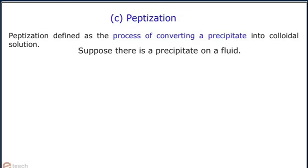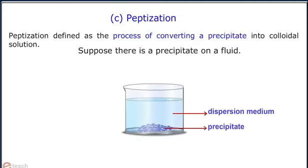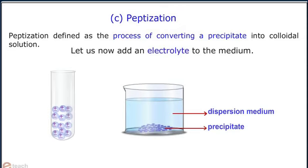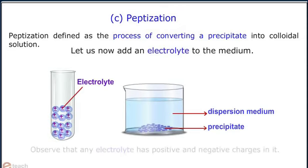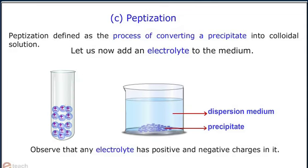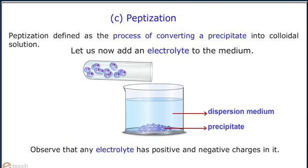Suppose there is a precipitate on a fluid. Let us now add an electrolyte to the medium. Observe that any electrolyte has positive and negative charges in it.